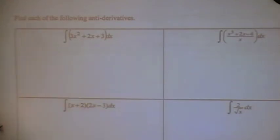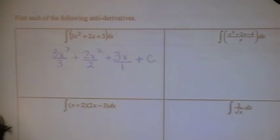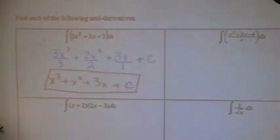So this first one I'm going to write out the steps. This would be 3X to the third divided by 3, plus 2X squared divided by 2, plus 3X divided by 1. And then I'm going to put plus C to indicate that I know there's probably a constant there. Now simplifying: that gives me X cubed plus X squared plus 3X plus C. That's your indefinite integral — you have to put the plus C.